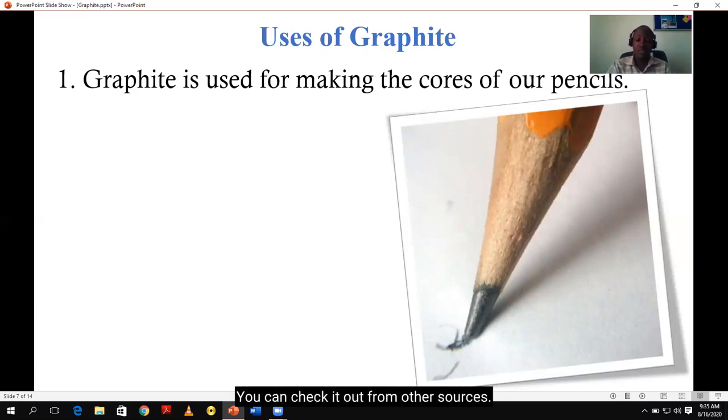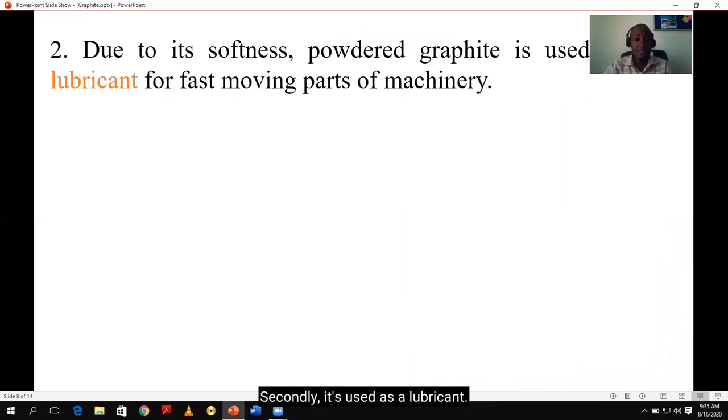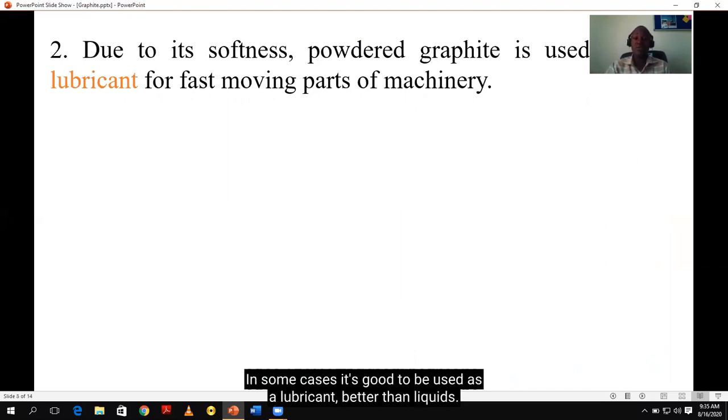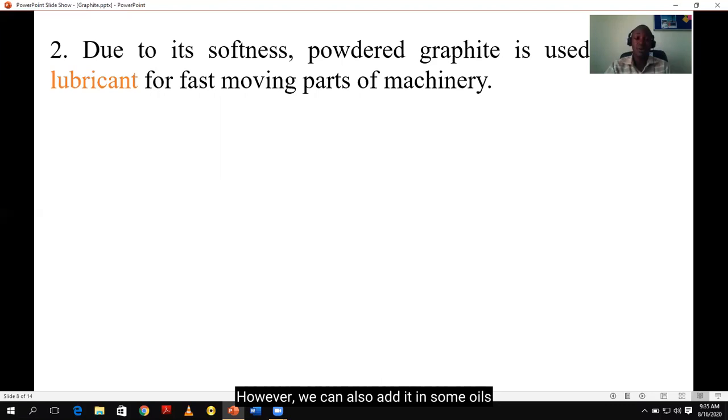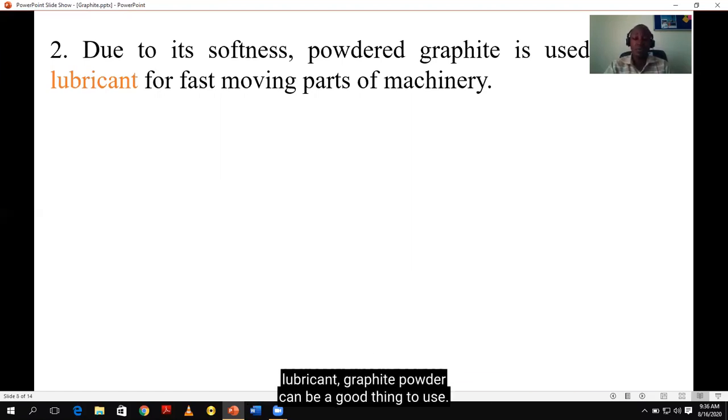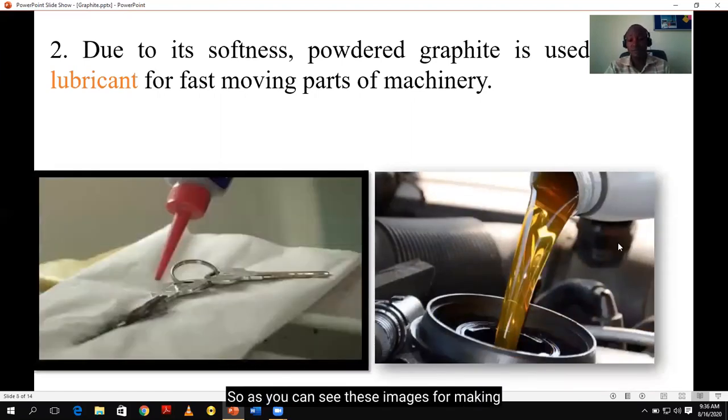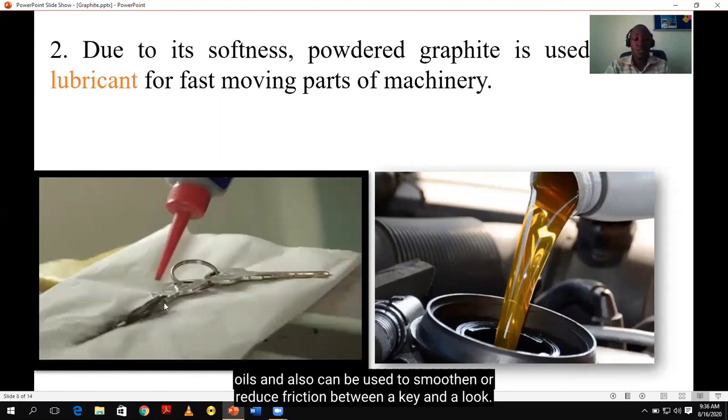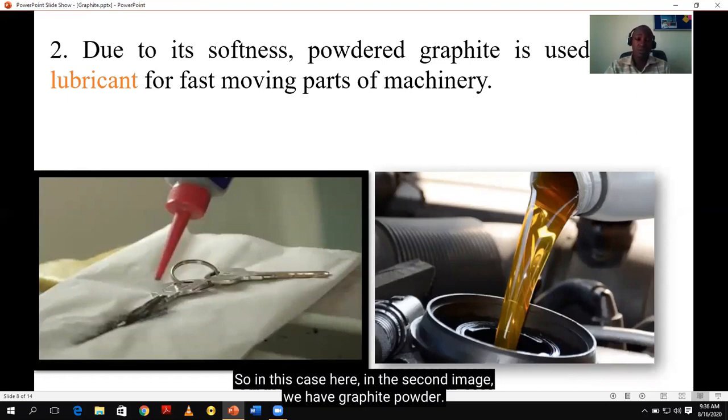We also have artificial graphite. You can check it out from other sources. Secondly, it's used as a lubricant. We said it's a bit soft when touched and slippery. When touched, you realize that graphite having a high melting point, in some cases, it's good to be used as a lubricant. It's better than liquids. However, we can also add it in some oils or petroleum products to make grease for lubrication. But for cases where they don't want to use liquid or where they want to use a dry lubricant, graphite powder can be a good thing to use. So as you can see these images for making oils and also can be used to smoothen or reduce friction between a key and a lock. So in this case here, in the second image, we have graphite powder. And lastly,